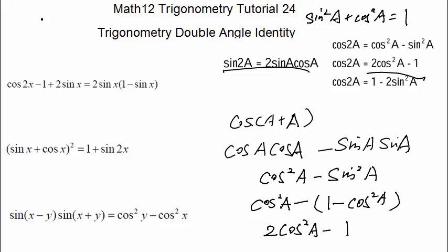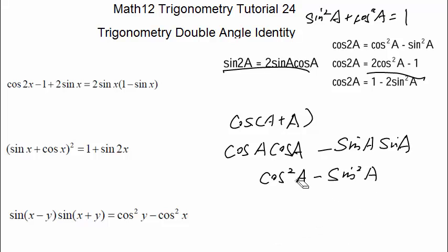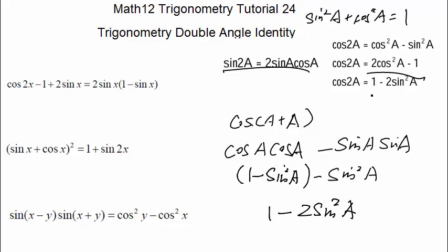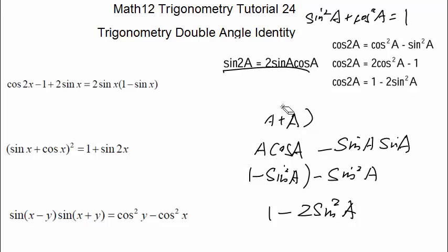Alternatively, if we want to leave sine a and remove cosine a, we substitute cosine²a = 1 - sine²a, giving us cosine 2a = 1 minus 2 sine²a. So cosine 2a has three equivalent formulas. Which one to use depends on the question — I'll show you examples.